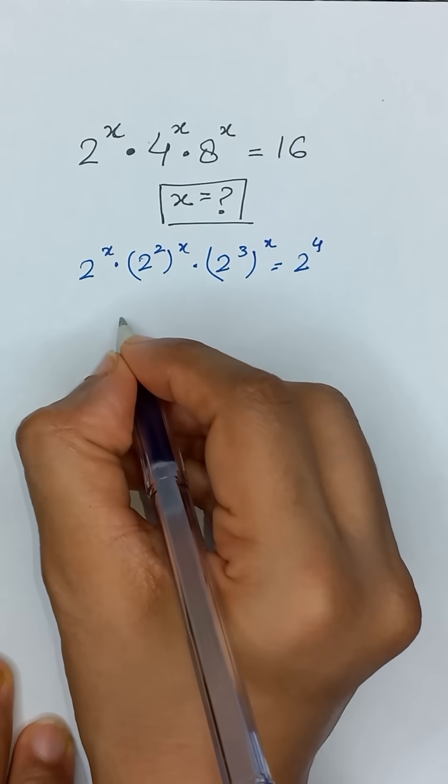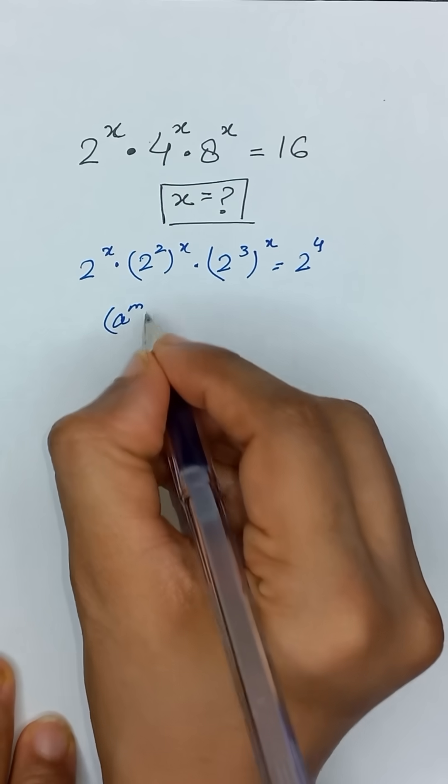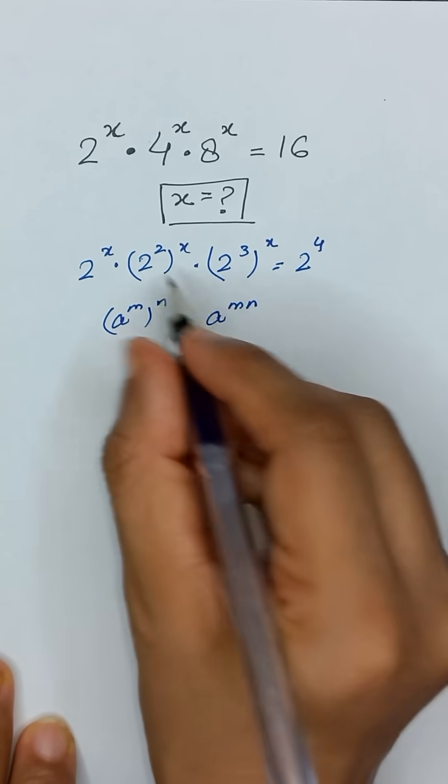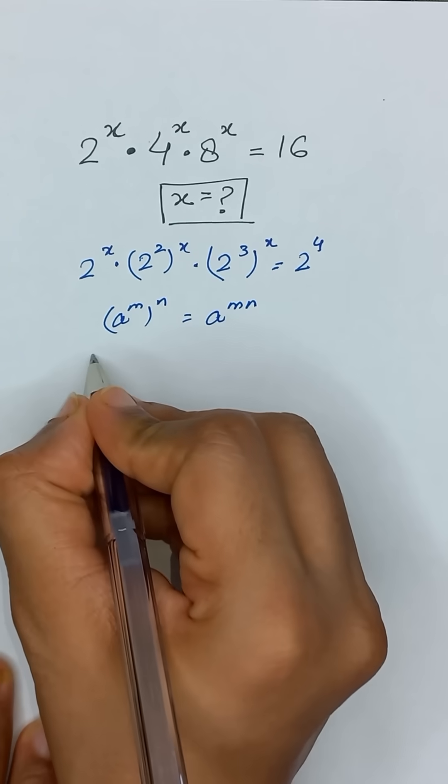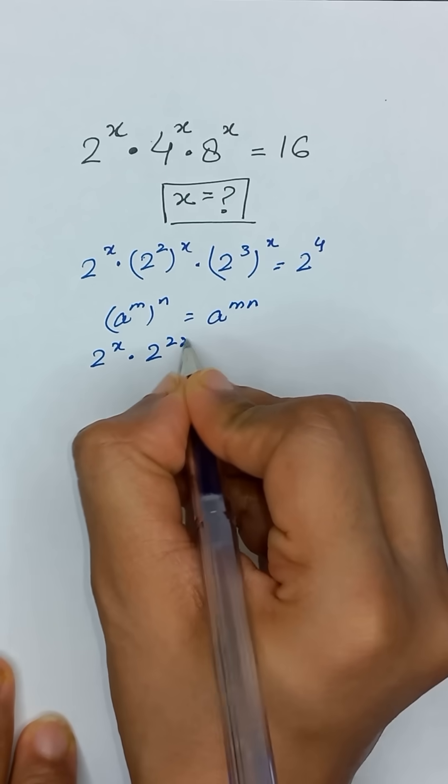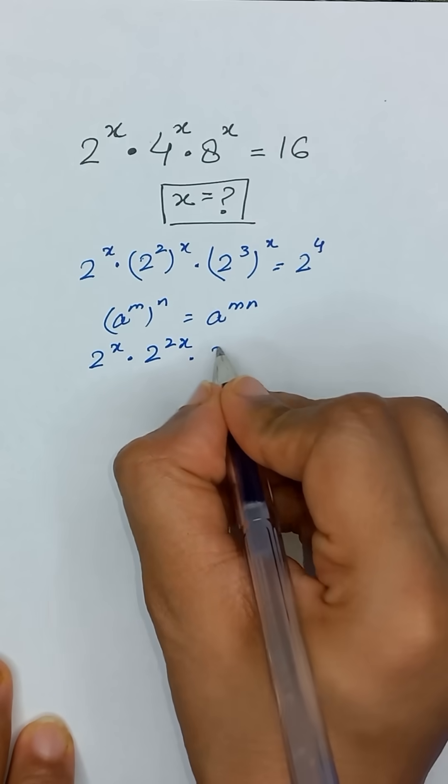We know the exponential rule: a to the power m whole power n equals a to the power mn. So it will become 2 to the power x times 2 to the power 2x times 2 to the power 3x.